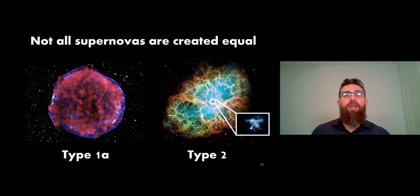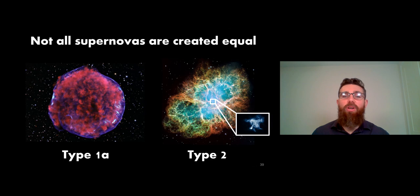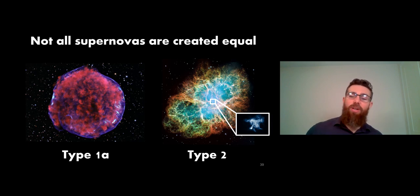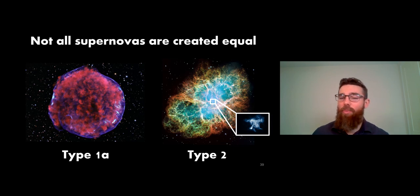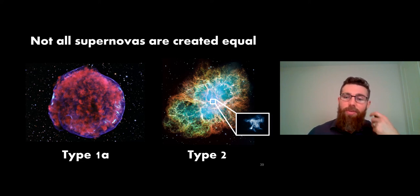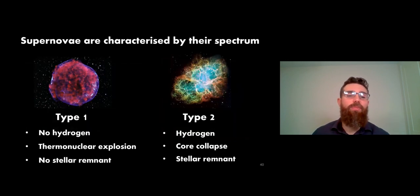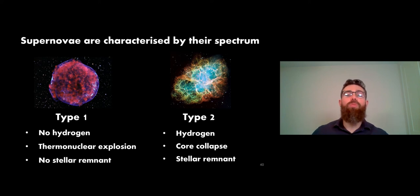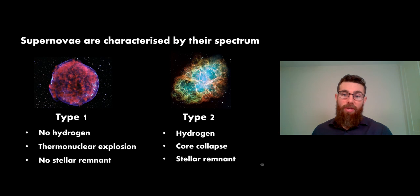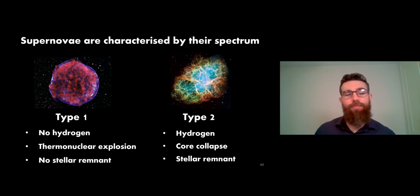It's worth noting that not all supernovae are created equal - you have type 1 and type 2 with many subcategories. Type 2 is from the death of a large star - a singular event with a single star. Type 1a is from a binary system of a white dwarf and a red giant. Type 1 supernovae show no hydrogen in their spectrum - they're thermonuclear explosions with no stellar remnant at the end. Type 2 do show hydrogen in the spectrum, come from the core collapse of a large star, and leave a stellar remnant - most likely a neutron star or black hole.